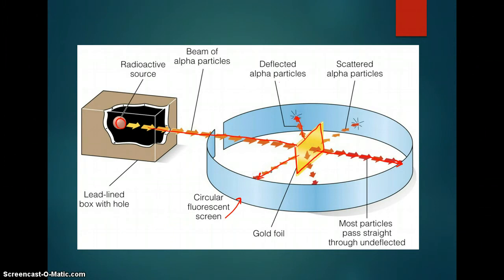Now the analogy of this is like, this gold foil, if this was tissue paper, this idea was so astounding that it was sort of the equivalent of shooting a gun, shooting a bullet at a piece of tissue paper, and having the bullet bounce back. It just didn't make sense using J.J. Thomson's plum pudding model.